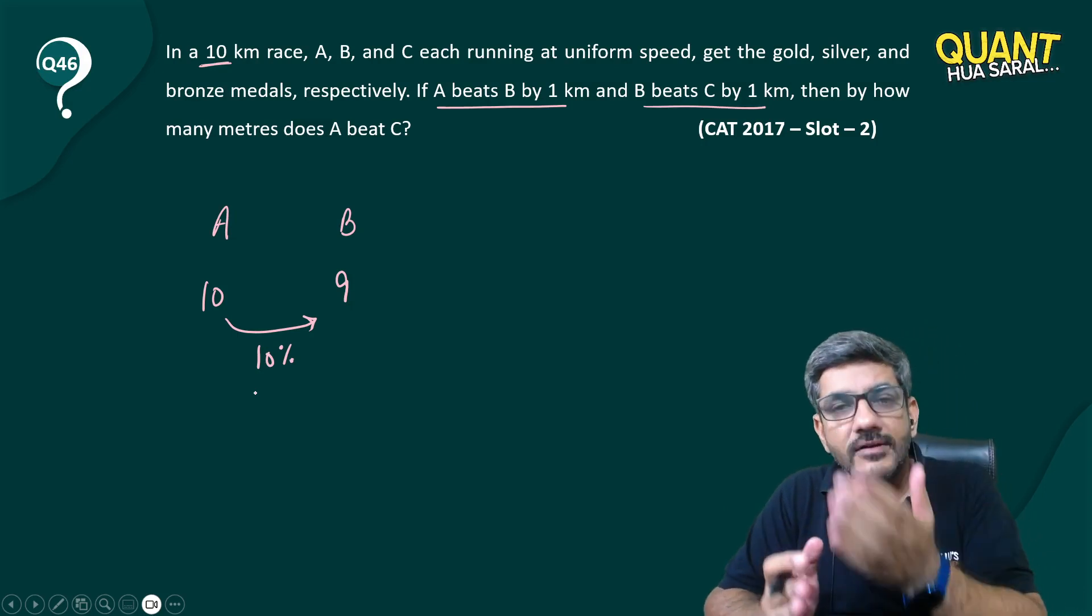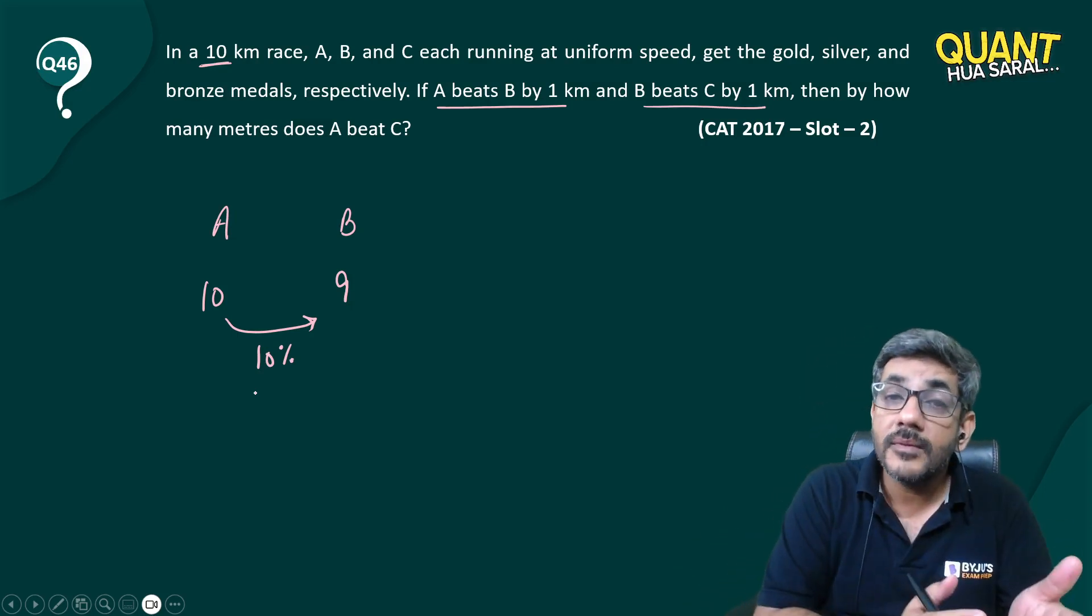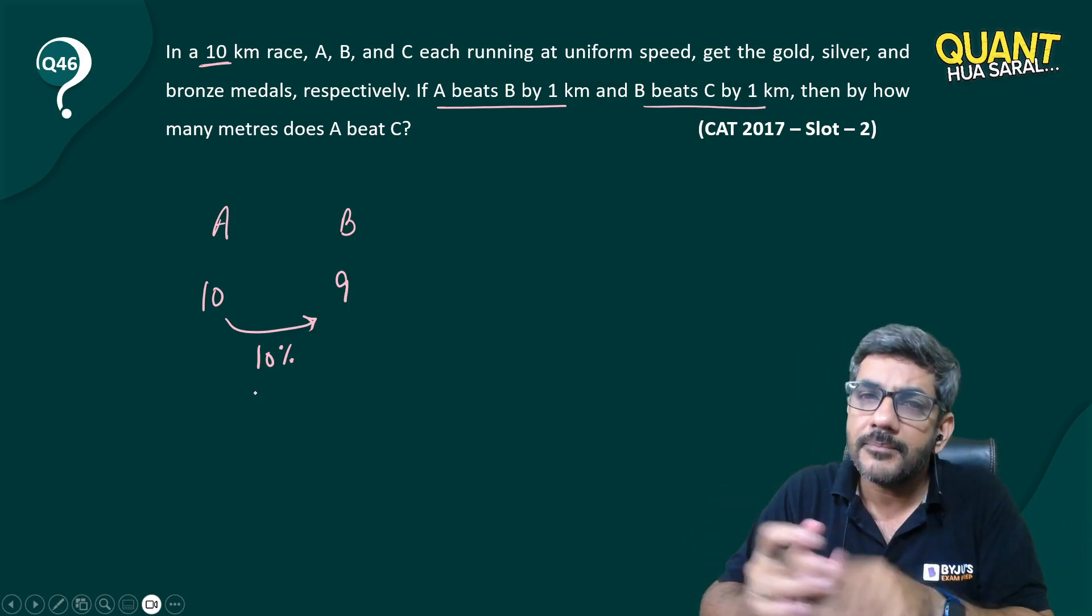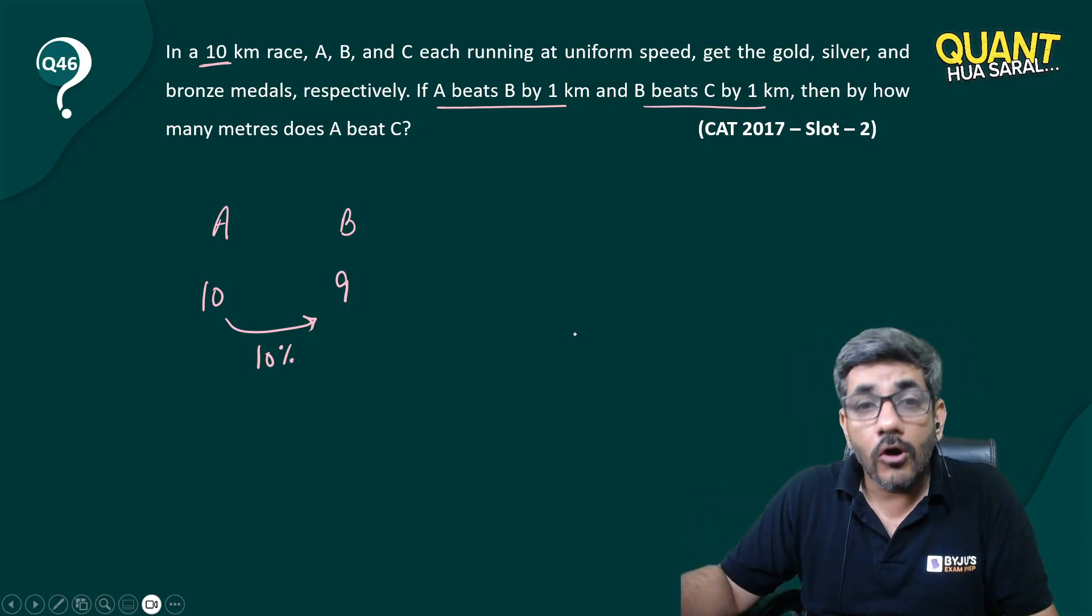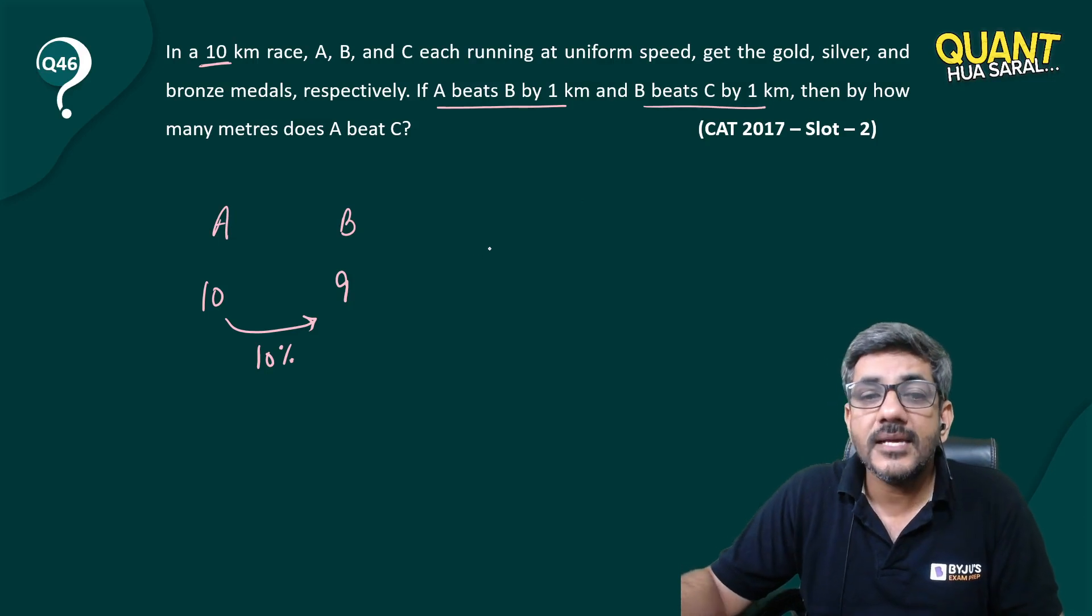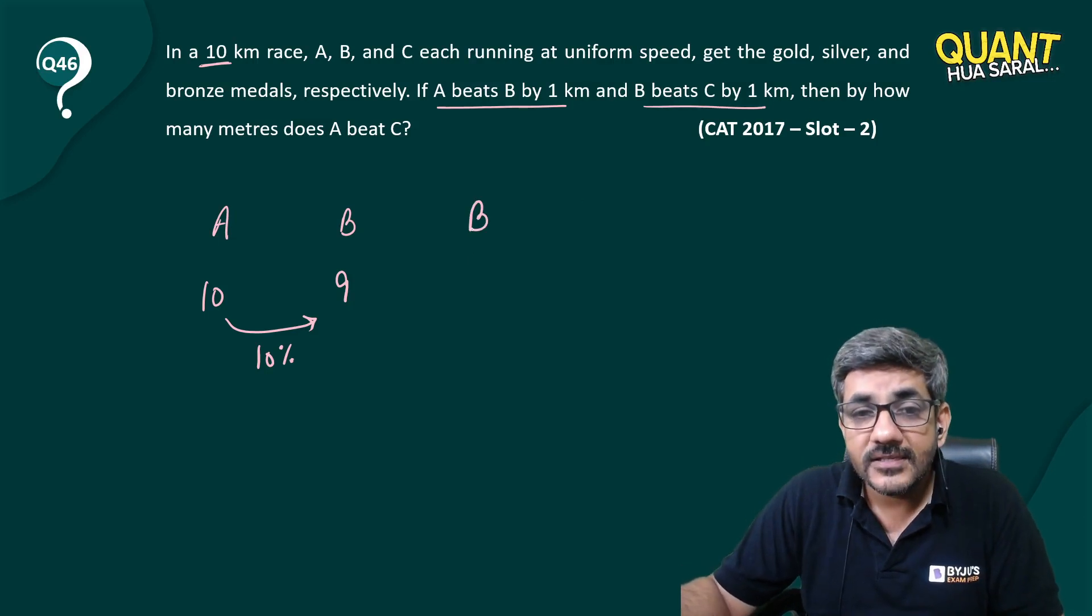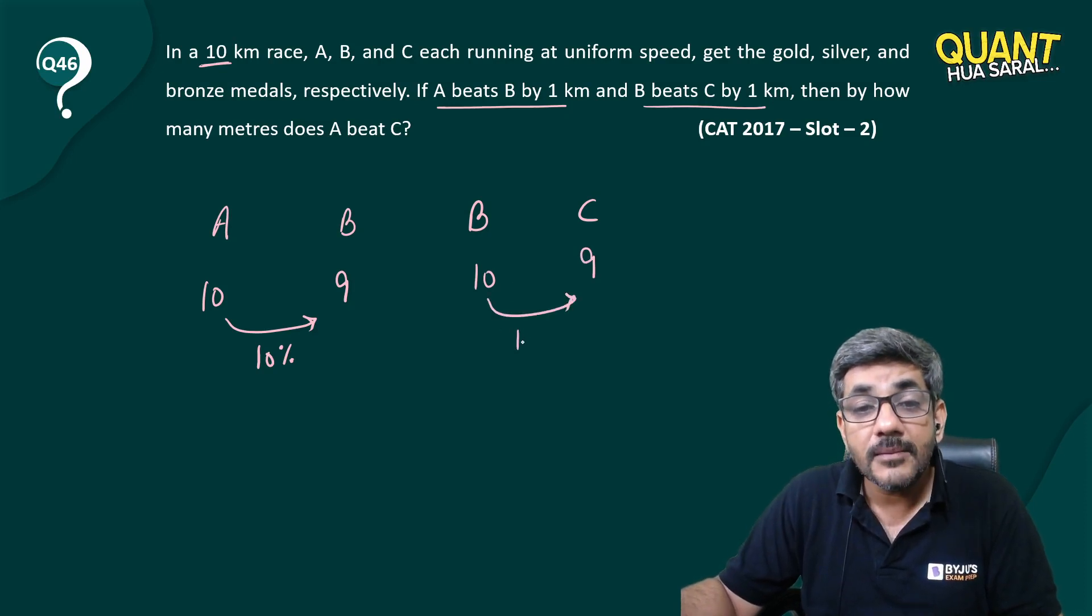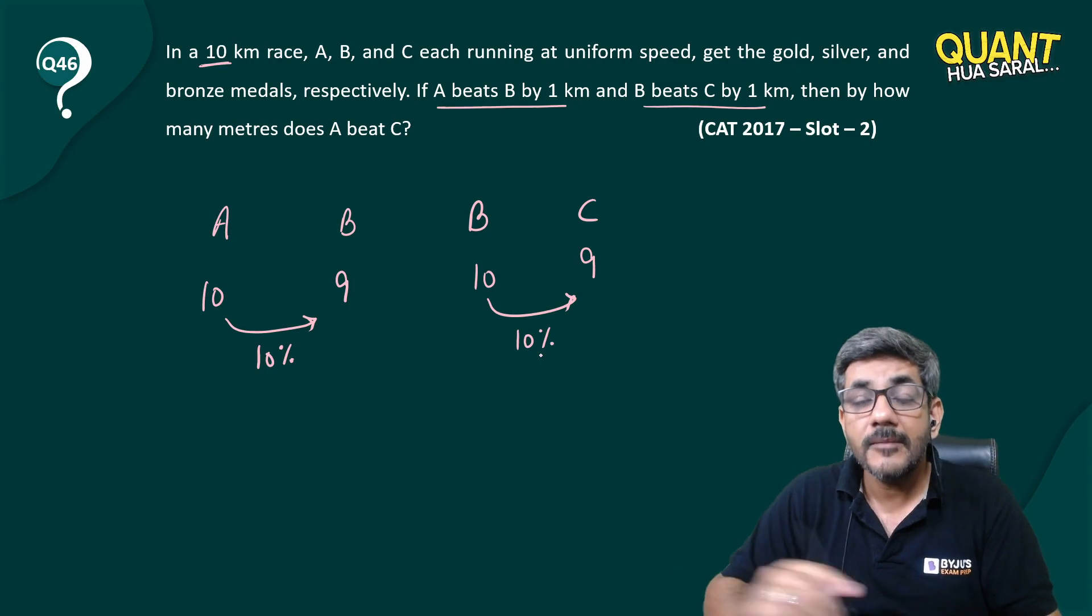kilometer, B would be covering 0.9. When A would be covering 2 kilometers, B would be covering 1.8. B would always be covering 10 percent less than A. Also, he says B beats C by 1 kilometer, that means when B covers 10, then C covers 9. That means C also covers 10 percent less than B. But what